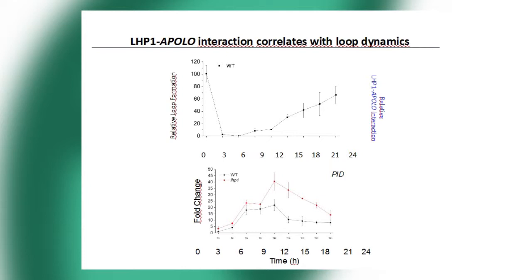We designed qPCR primers to quantitatively measure loop formation in different plant lines. Taking wild-type as 100%, loop formation was enhanced in RNAi plants (knockdown of Apollo) and reduced in LHP1 mutants — suggesting both the RNA and the protein regulate loop formation. We then performed kinetics with 3C and found that the loop quickly opens when Apollo RNA begins to go up, and then is reconformed as RNA levels go down. In the LHP1 mutant, basal loop levels were lower, it opened quickly, but the rate of reconformation was significantly impaired. This correlates with higher PID expression in response to auxin in LHP1 mutants — PID peaks at a higher level at 12 hours and has difficulty going back down.